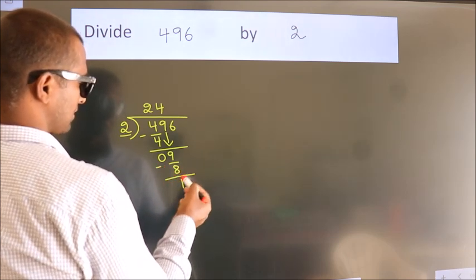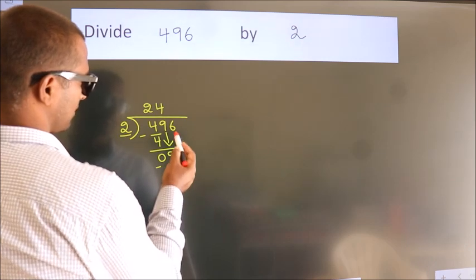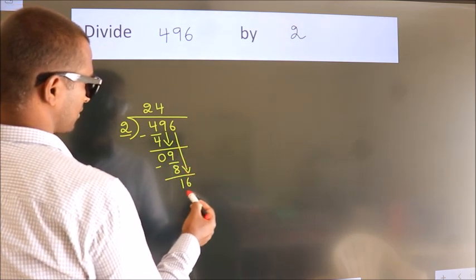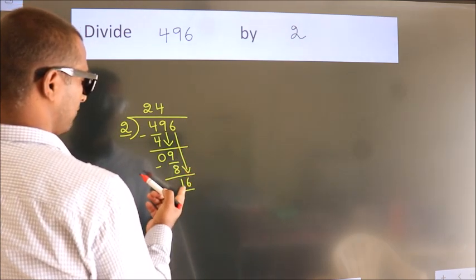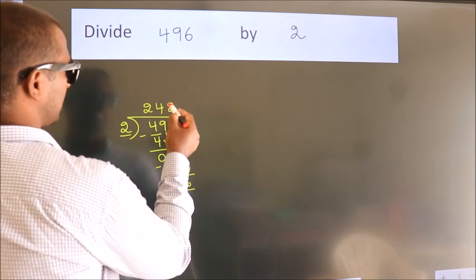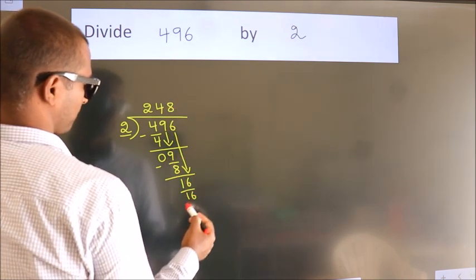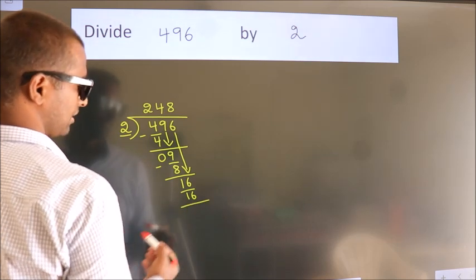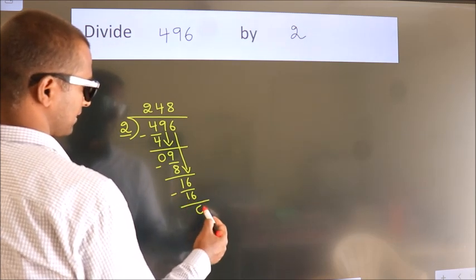After this, bring down the beside number. So 6 down, giving us 16. When do we get 16? In 2 table, 2 times 8 is 16. Now we subtract. We get 0.